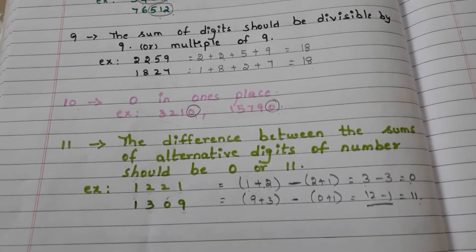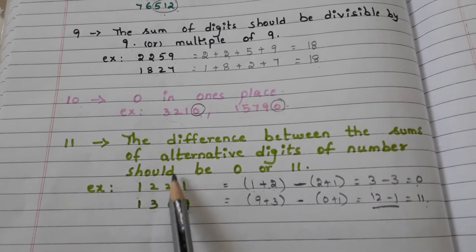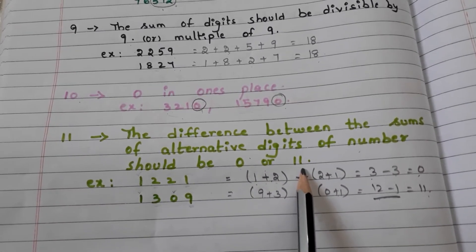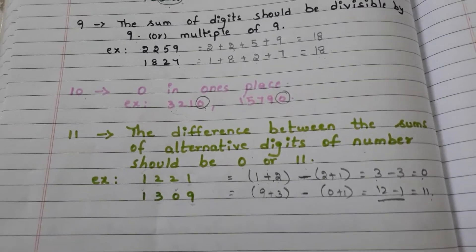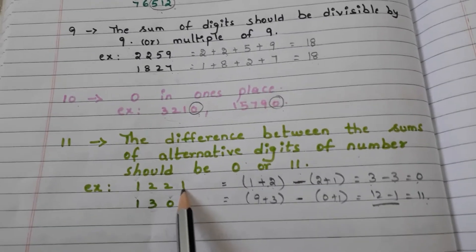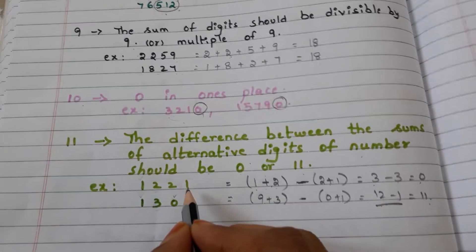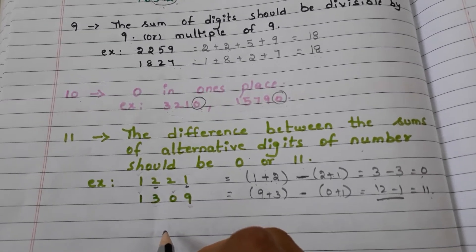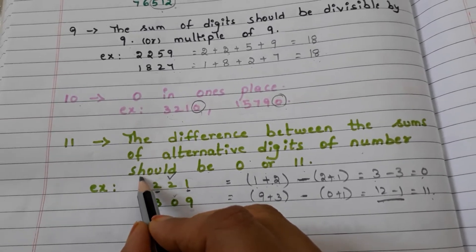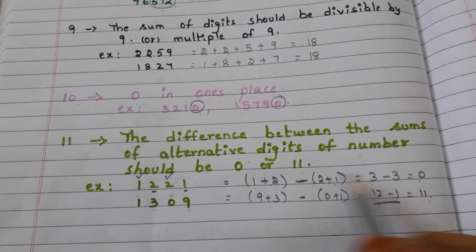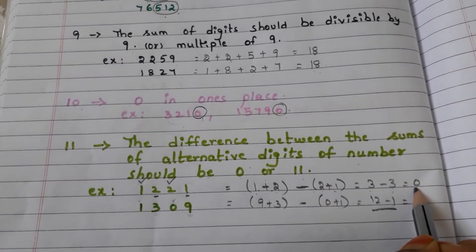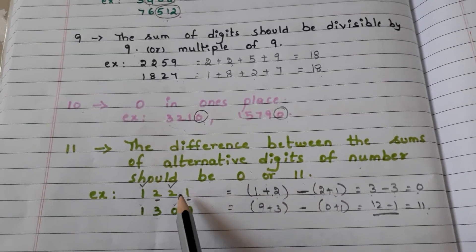Let us go for 11. The difference between the sum of alternate digits of a number should be 0 or 11 — then that number is divisible by 11. For example, in the number 1221, take the alternate digits: 1 and 2. Then the other alternate digits: 2 and 1. 1 plus 2 is 3, and 2 plus 1 is 3. The difference is 0. So, the entire number is divisible by 11.